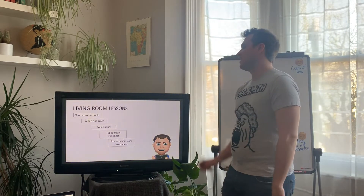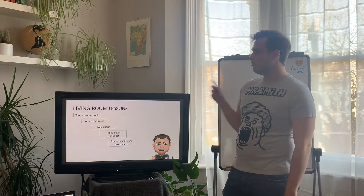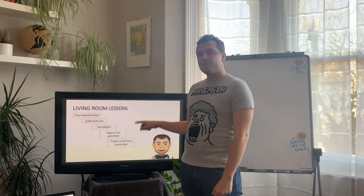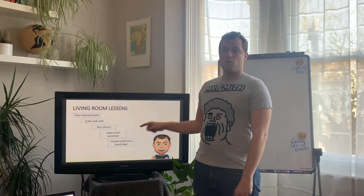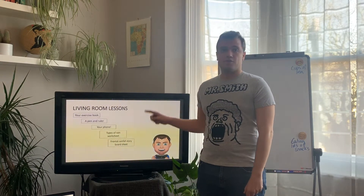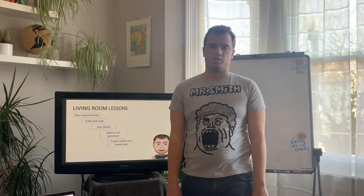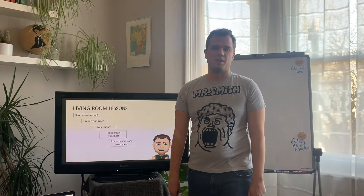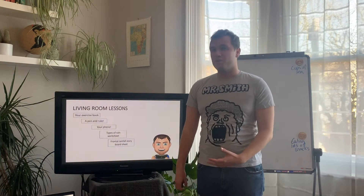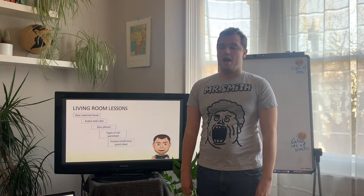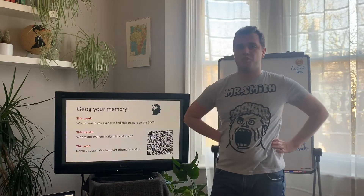So what you are going to need today is your exercise book, a pen, a ruler, your phone, and the types of rain worksheets which will be on the email. You can just open those up and use them. Also the frontal rainfall storyboard sheet, which will also be there — either print that out or copy it into your books if you haven't got access to a printer.